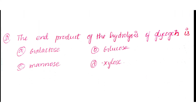Question number 21: The end product of hydrolysis of glycogen is. Option A: Galactose. Option B: Glucose. Option C: Mannose. Option D: Xylose. The answer is Option B: Glucose.